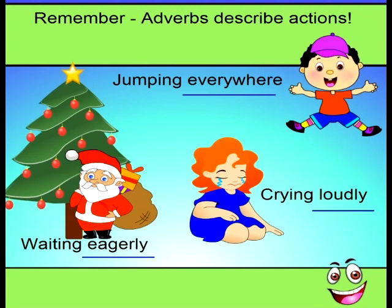So remember, adverbs describe actions. For example, jumping everywhere — where was the boy jumping? He was jumping everywhere. How was the girl crying? She was crying loudly. The adverb is telling us the manner in which the girl was crying.